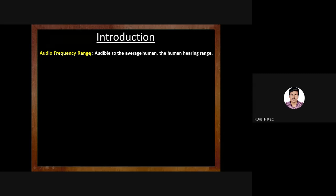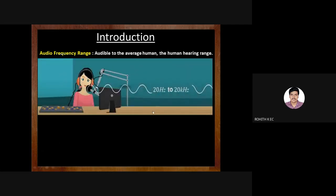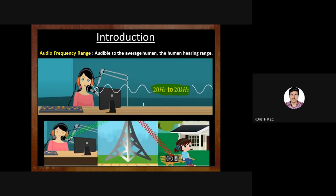The audio frequency range is from 20 Hz to 20 kHz. So only if the frequencies are in this range can we hear them. Any frequency above or below this range is not interceptable by our ears. Thus our information or message signal should be in this frequency range, from 20 Hz to 20 kHz.